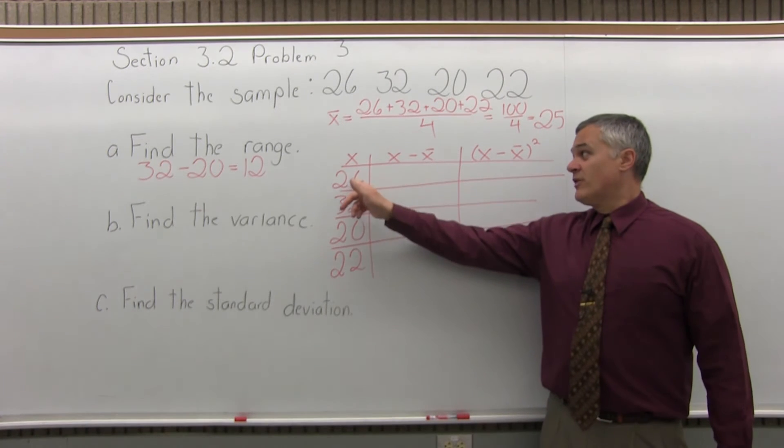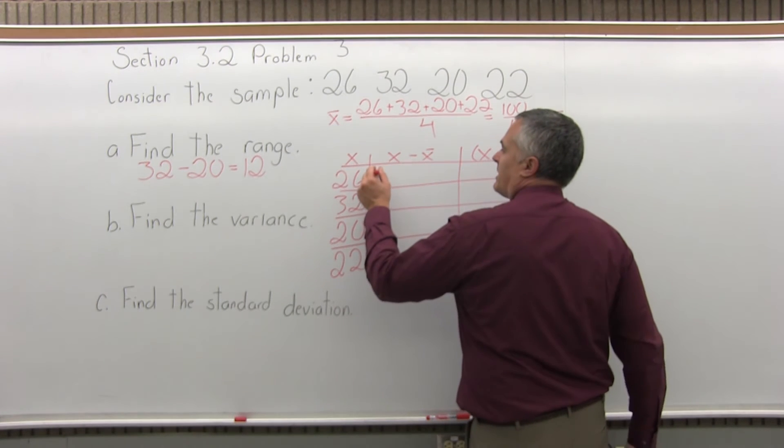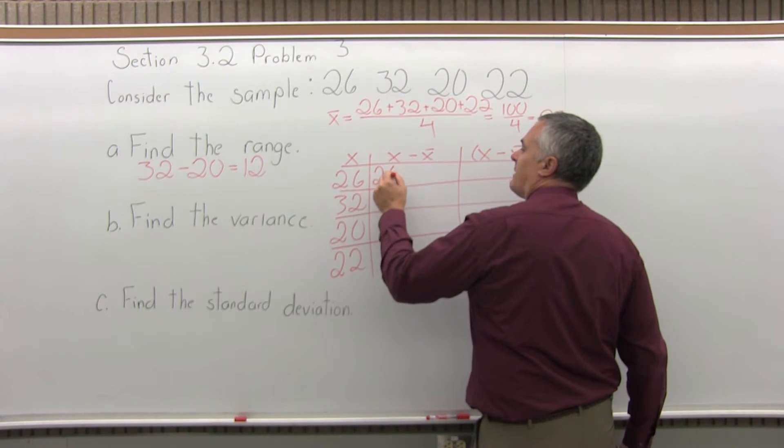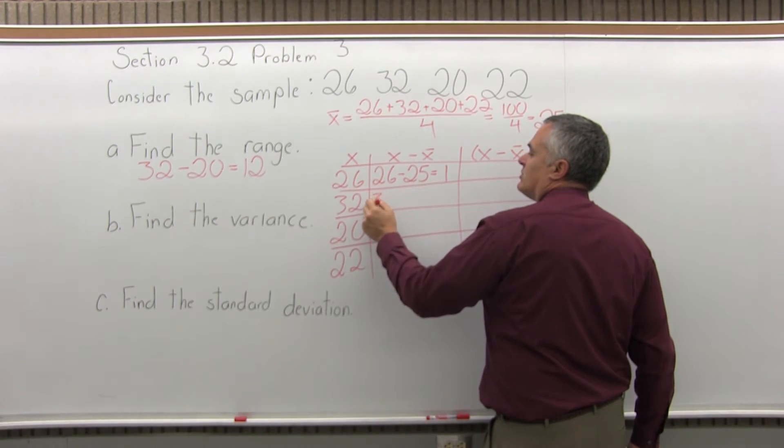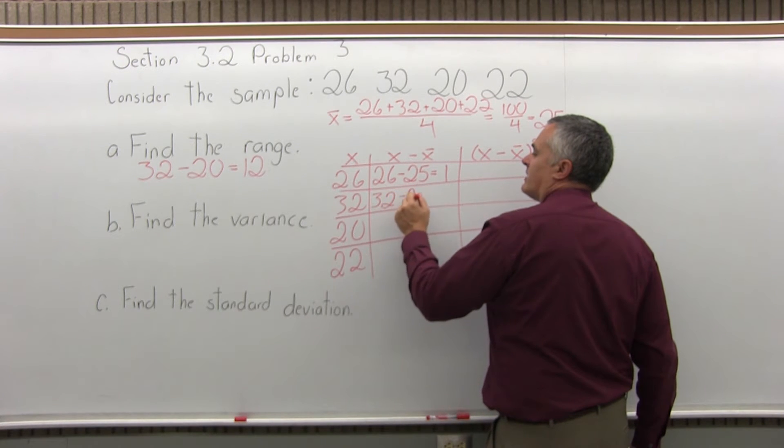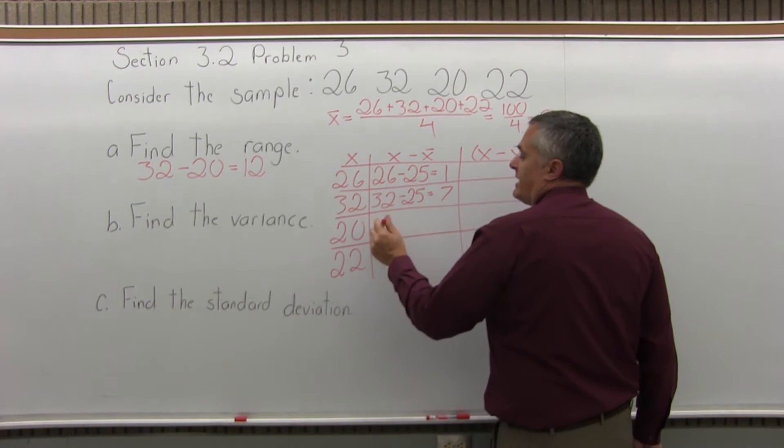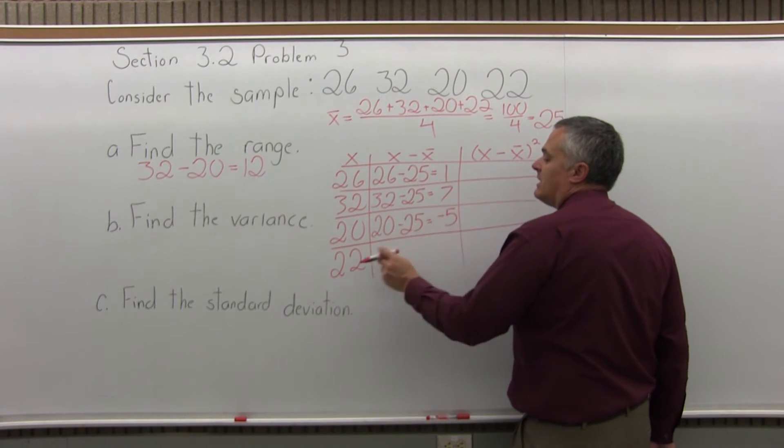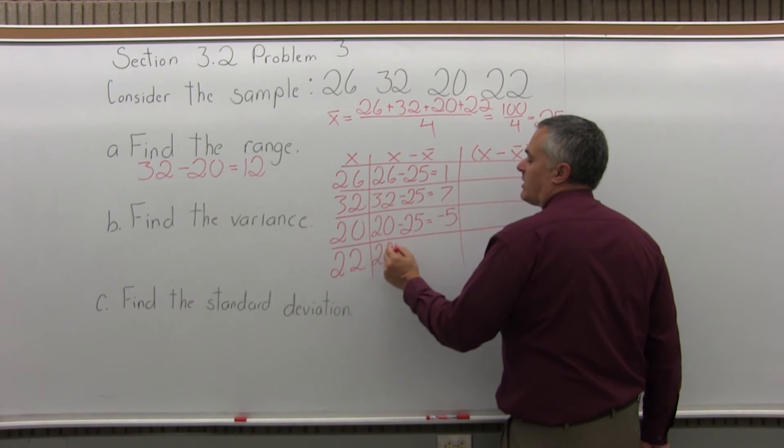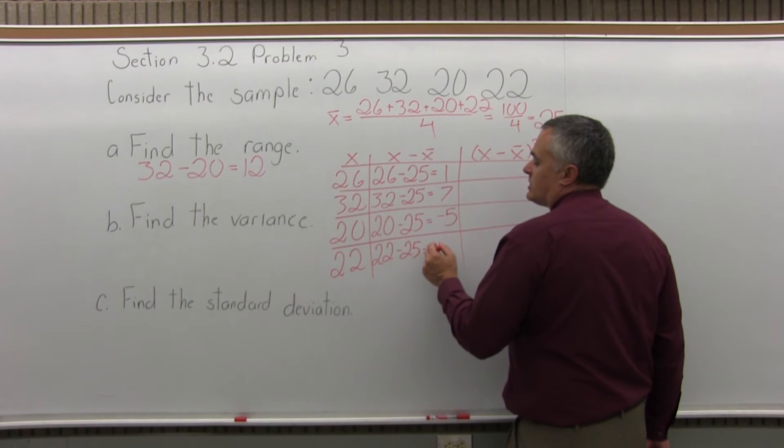And then for the next column, for every value of X, you subtract off X bar, which for our problem here is 25. So in the top row, X minus X bar will be 26 minus 25, which is positive 1. And the next row down, X is 32, so X minus X bar is 32 minus 25, which will be positive 7. Then in the next row down, X is 20, so X minus X bar is 20 minus 25, which would be negative 5. And finally in the bottom row, X minus X bar will be 22 minus 25, which is negative 3.